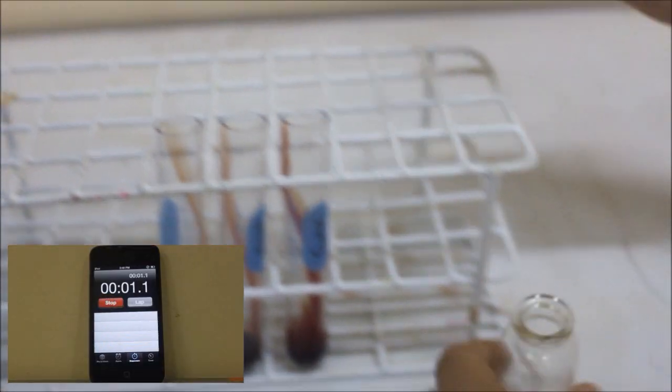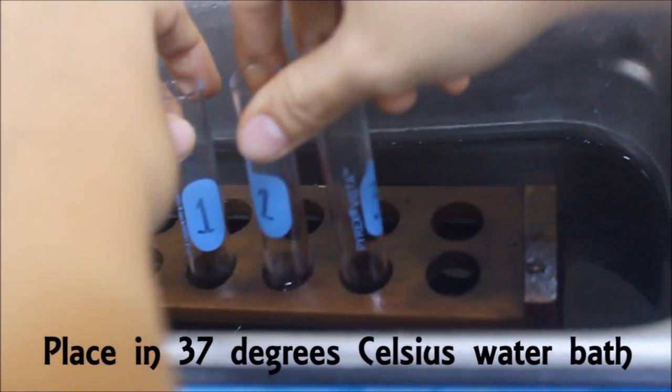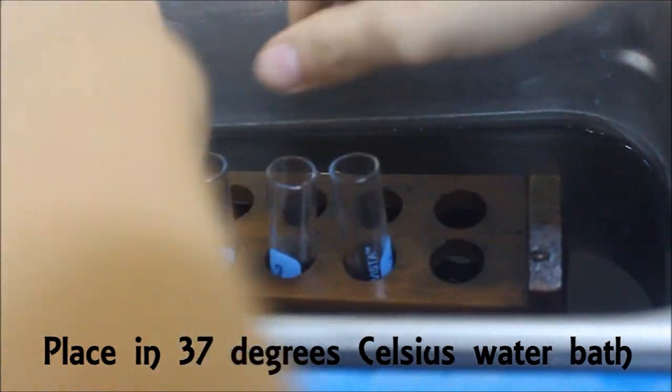Start the timer as soon as the blood is placed in test tube number 3. Discard the last 1 mL of blood. Place the test tubes in a 37-degree Celsius water bath.